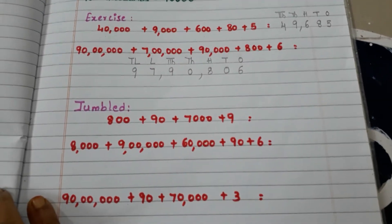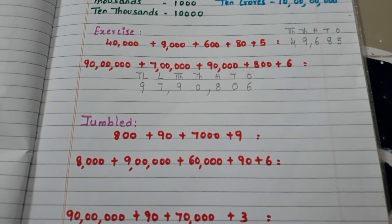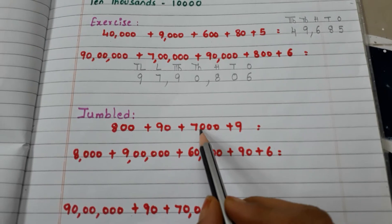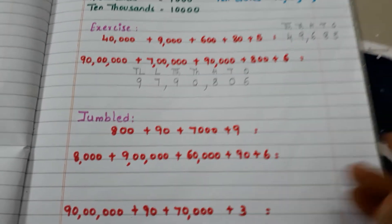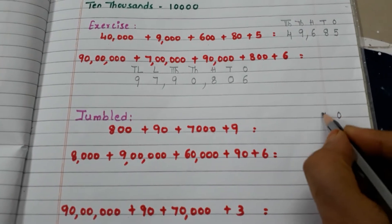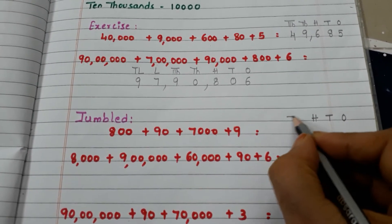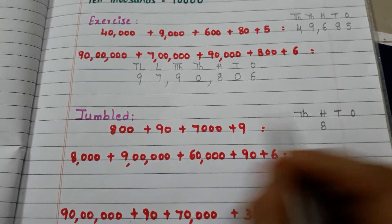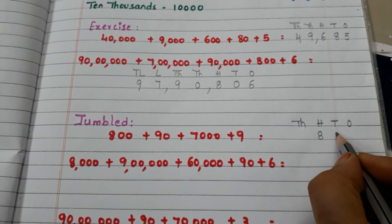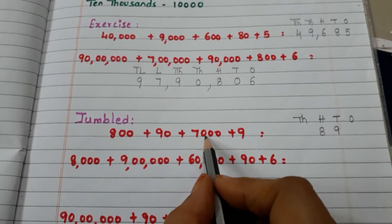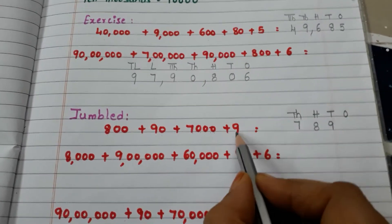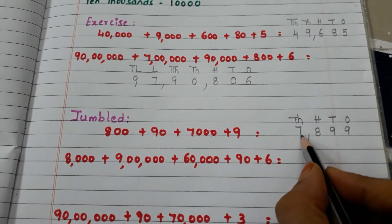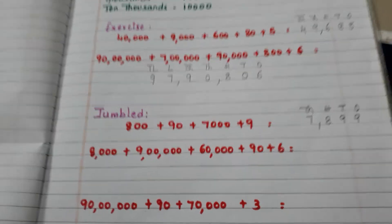Let us go to some more examples where the place values are not in order. Let us take the highest number of zeros — 3 zeros — so we have the number till thousands. Write the places: ones, tens, hundreds, thousands. 800 means in the hundreds place write 8. 90 — in the tens place write 9. 7000 — in the thousands place write 7. 9 ones — in the ones place write 9. So the number is 7,899.